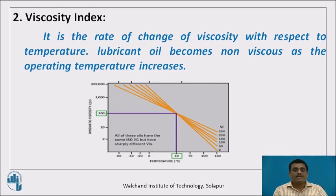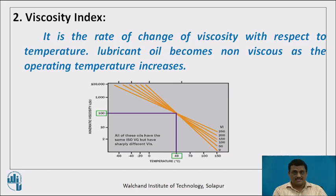The second property is viscosity index. We use lubricating oil in a machine, which is then operated, and because of friction of metallic parts, frictional heat is generated. We have to consider what impact the evolved heat has on viscosity — that is called viscosity index. Viscosity index is the rate of change of viscosity with respect to temperature. Lubricant oil becomes non-viscous as the operating temperature increases.